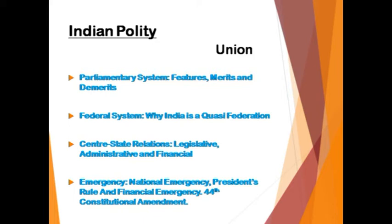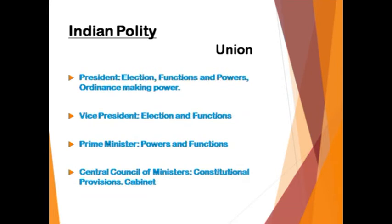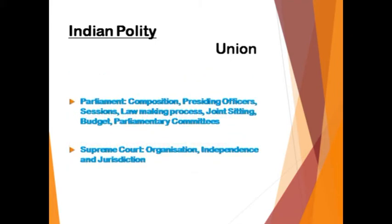Now comes the union part. We need to study the parliamentary system — its features, merits and demerits — then the federal system and why India is a quasi-federation. We need to study the relationship between the centre and the state: legislative, administrative, and financial. Then we need to study emergency — national emergency, President's rule, and financial emergency — with complete focus. Then comes the President, Vice-President, Prime Minister — their powers and functions — the central council of ministers, constitutional provisions, and cabinet. Then Parliament: composition, presiding officers, sessions, law-making processes, budget, and parliamentary committees, which should be studied with complete focus.